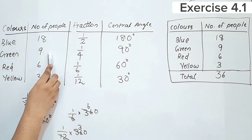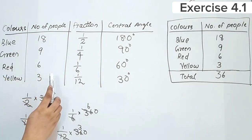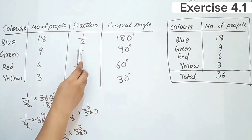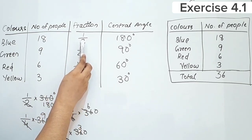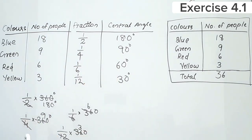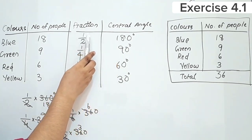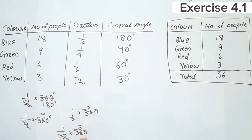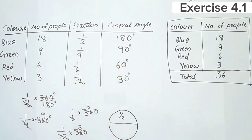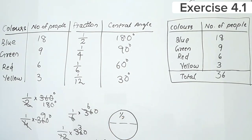In the pie chart table: the first column is color, the second is number of people, the third is the fraction. The fraction is number of people divided by total number of people. Simplifying gives 1/2, 1/4, 1/6, and 1/12. The central angle is this fraction multiplied by 360 degrees. For blue, 1/2 of 360 degrees gives 180 degrees.